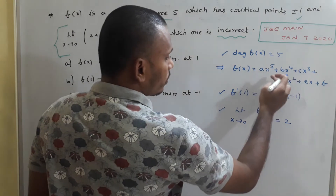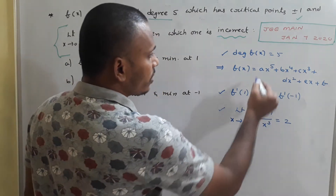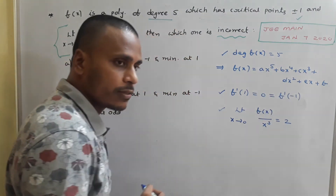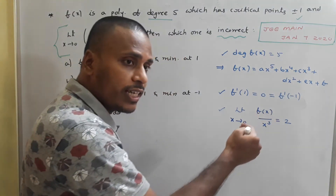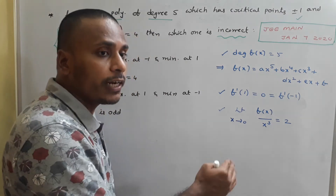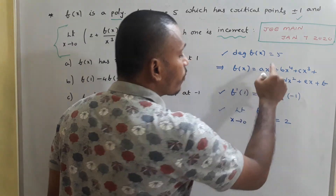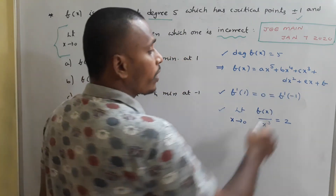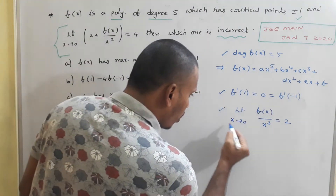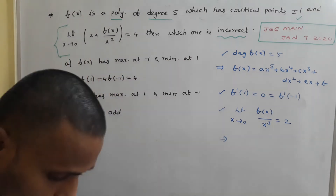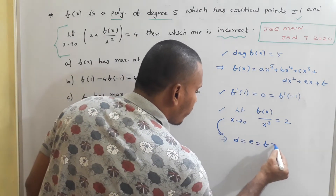When dividing dx² by x³, we get d/x, which tends to infinity as x→0. Since the limit is given as a constant, dx², ex, and f are not suitable terms for f(x) under this condition. Therefore, from this analysis, we conclude that d = e = f = 0.